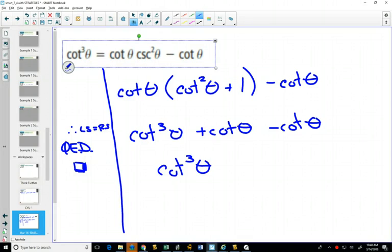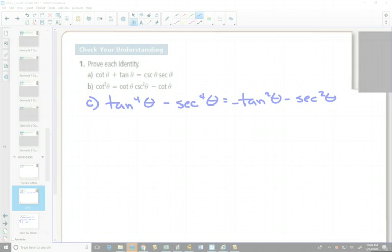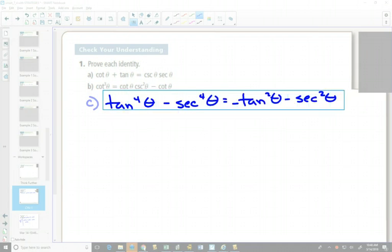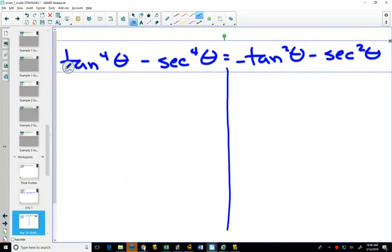And you get cotangent cubed theta. And we're done. And the last one that we have here. Again, draw our line down the middle.